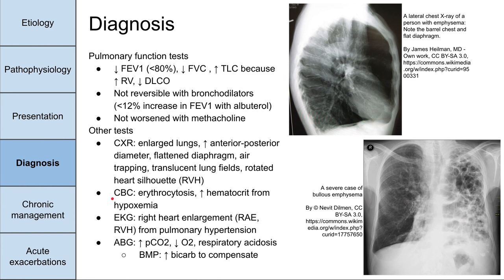On complete blood count, patients might also have erythrocytosis — high red blood cells — and a high hematocrit. This is the body's compensatory mechanism for hypoxemia: if the body has low oxygen, it increases red blood cells and hematocrit to compensate. On EKG, you might see right atrial enlargement and right ventricular hypertrophy from pulmonary hypertension backing up into the heart. On arterial blood gas, you might have increased PCO2, decreased O2 — a respiratory acidosis — and the body will compensate with a high bicarb on BMP.